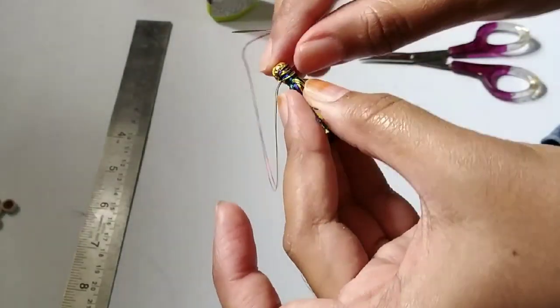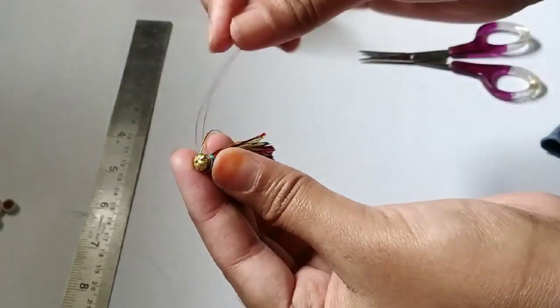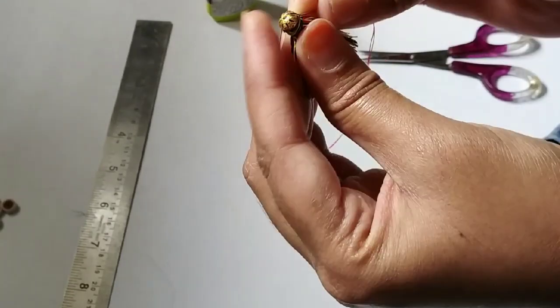So once this tying of knot is done, try to bring the needle to the center and as a last step we will be using an ear hook here.